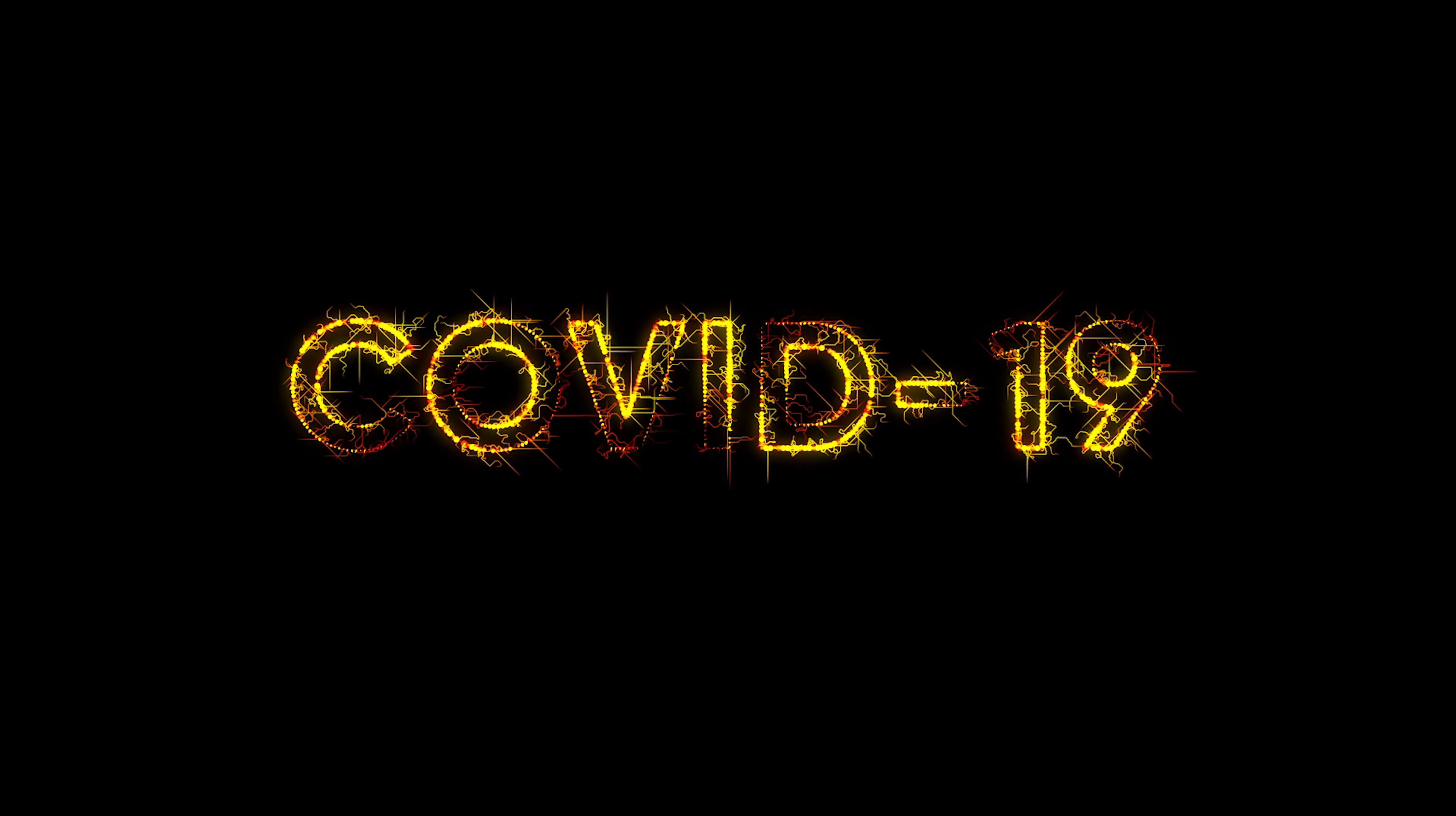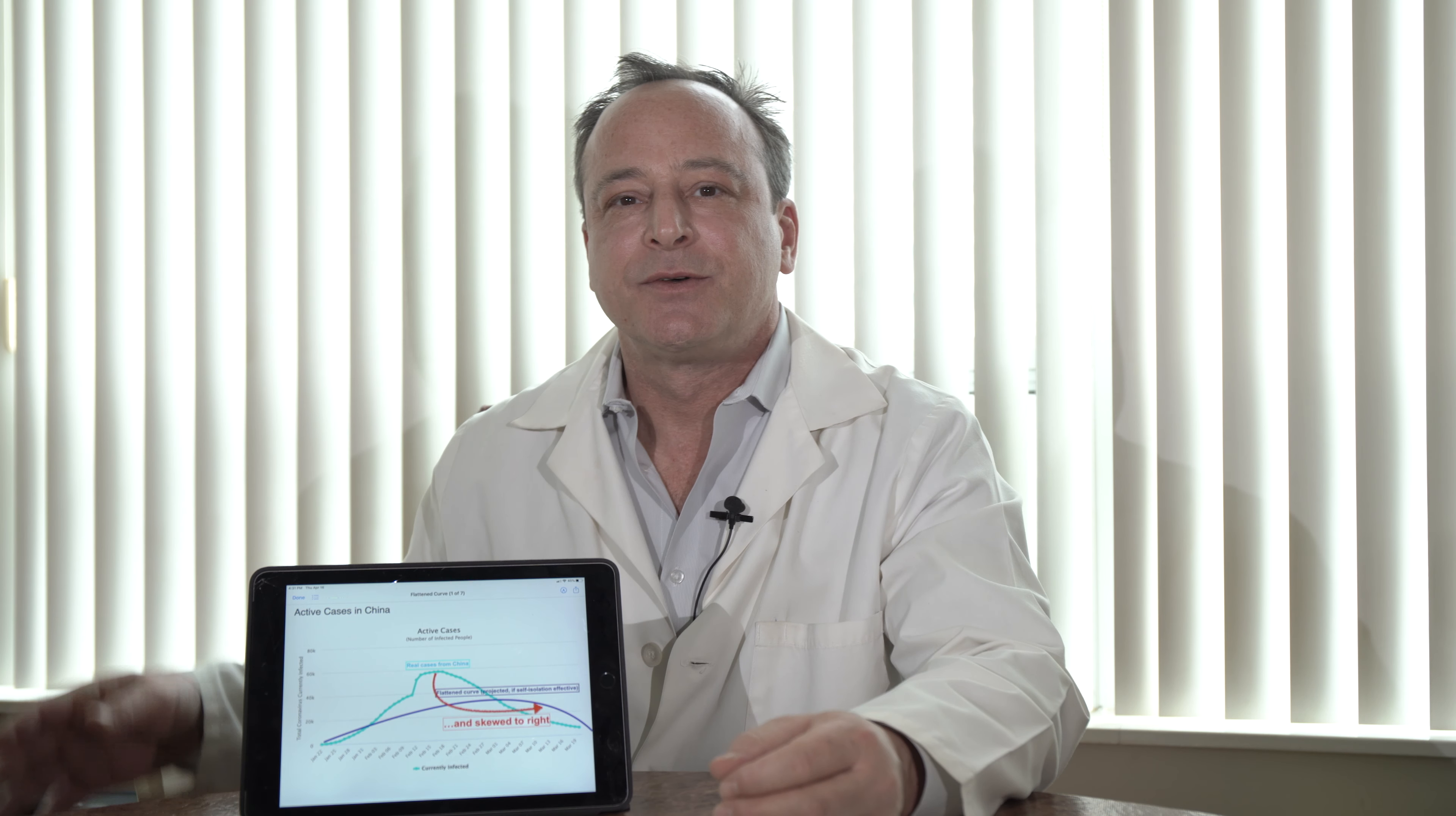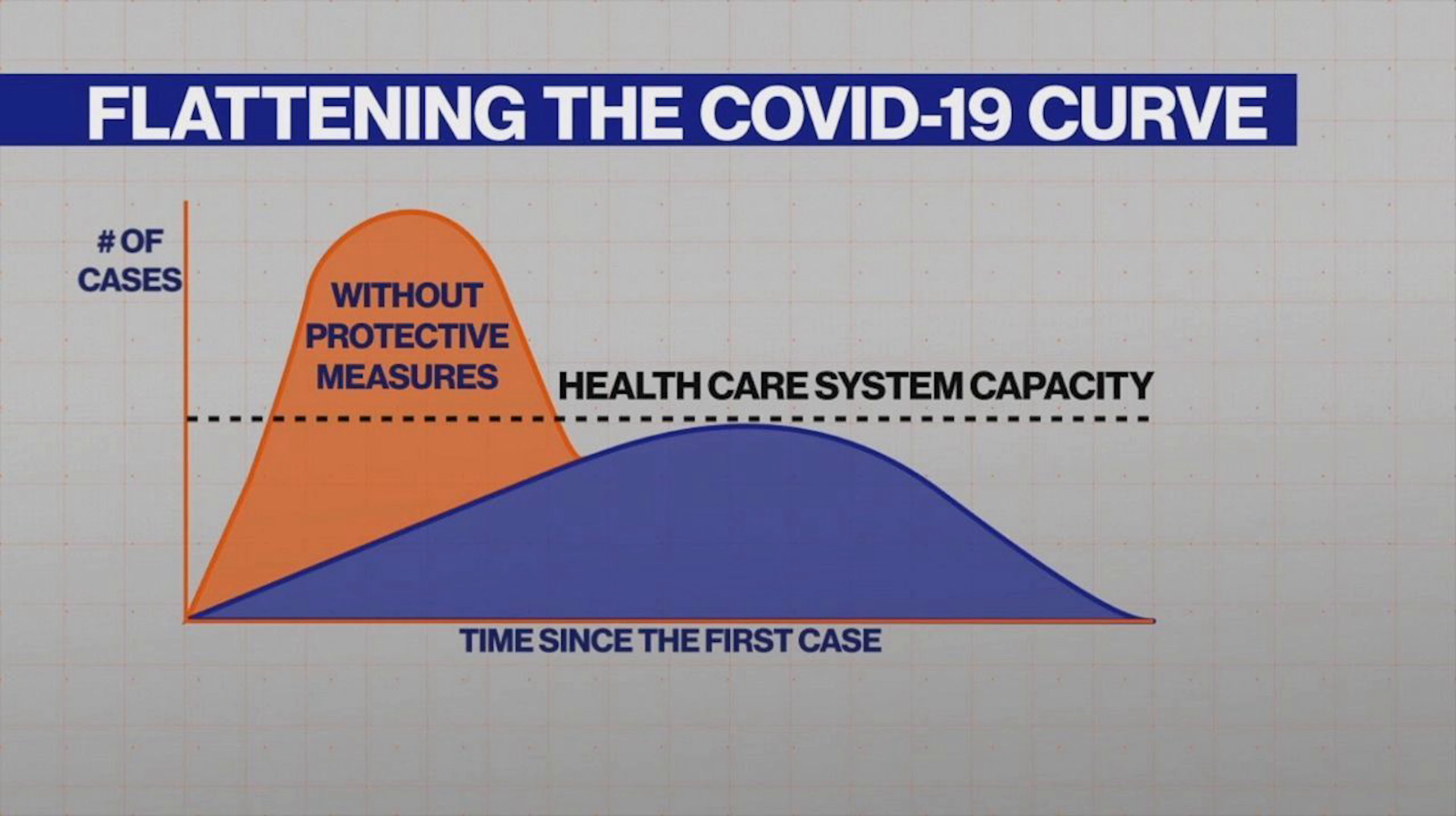What is meant by flattening the curve? What that refers to is over time, so in the x-axis over time from left to right, that there is a flattening of this curve, so decreased number of cases over time. That is the general simplistic way of saying flattening the curve.